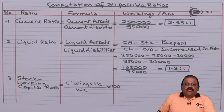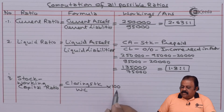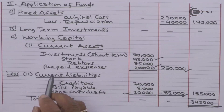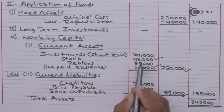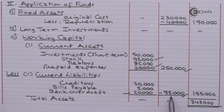Stock to working capital ratio formula is closing stock divided by working capital multiplied by 100. Stock is 95,000 and working capital (current assets minus current liabilities) is 1,55,000.